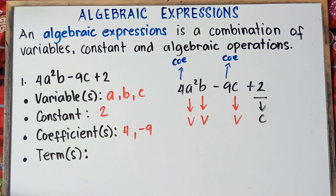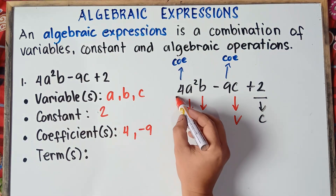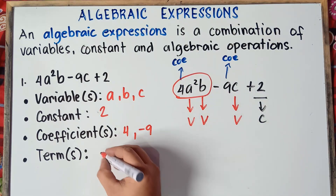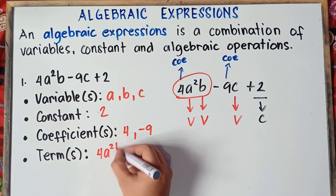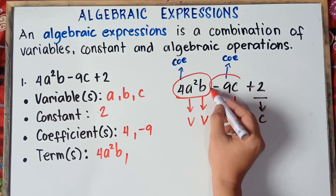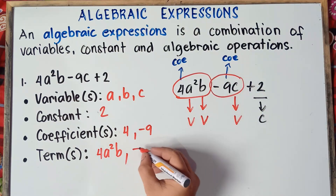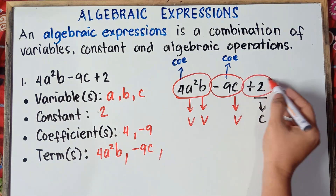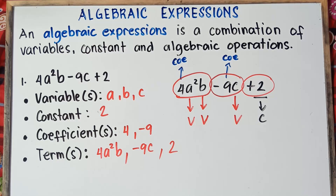And then the terms: our first term is 4a squared b, our second term is negative 9c (include the minus sign), and our last term is positive 2. That's the answer for example number 1 — easy as that.